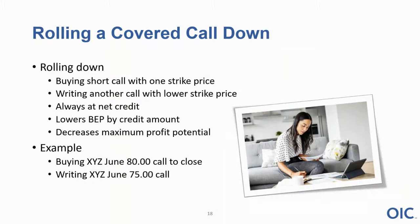Rolling down is the complete opposite. We're still buying back that June 80 call to close, but instead of selling the higher 85 strike, we're rolling it down to sell the 75 strike — the more expensive strike — which means we're doing the trade at a net credit, putting more money back into our pocket. It also lowers our break-even point by that amount, but it decreases our maximum profit potential. So rolling up is at a net debit and increases our break-even point; rolling down is at a net credit and lowers our break-even point.